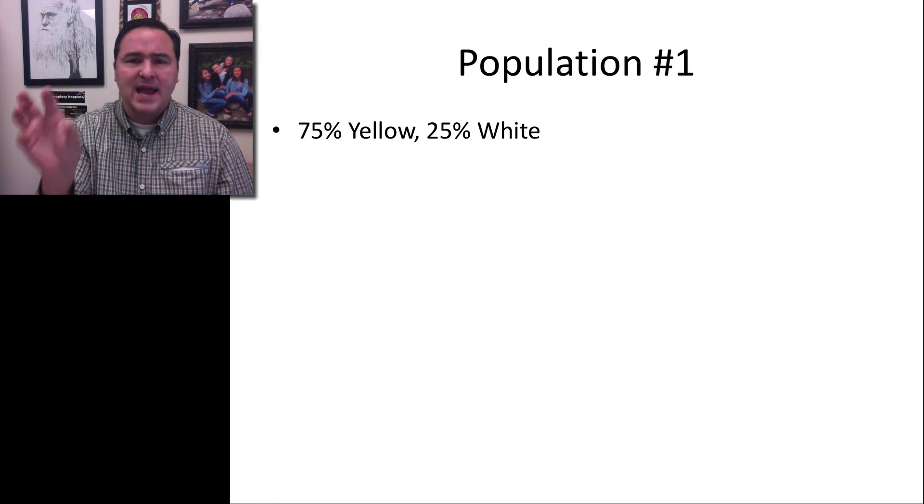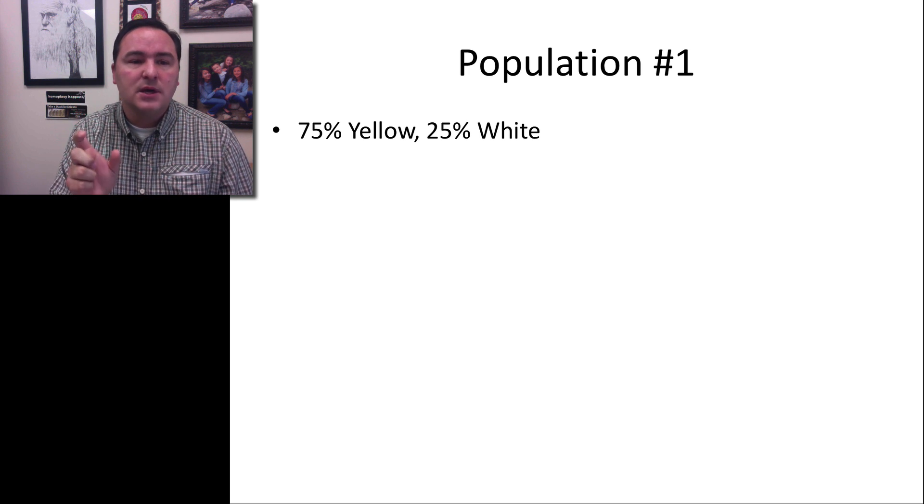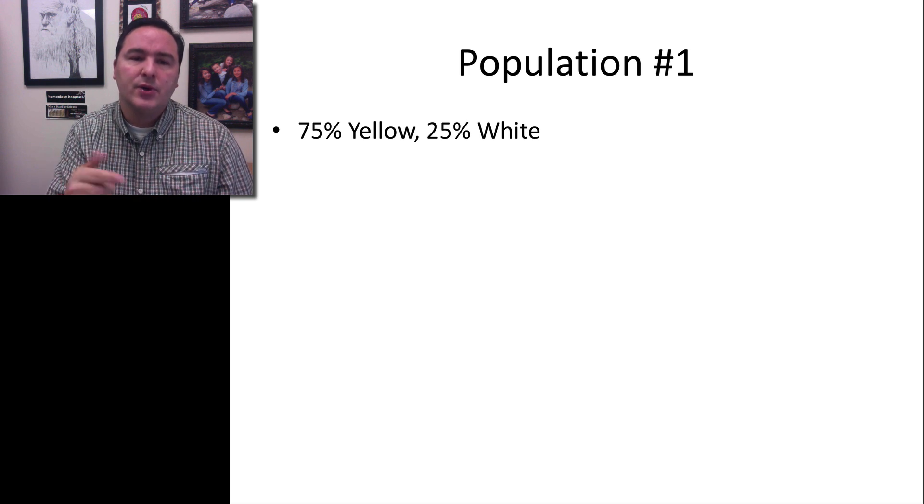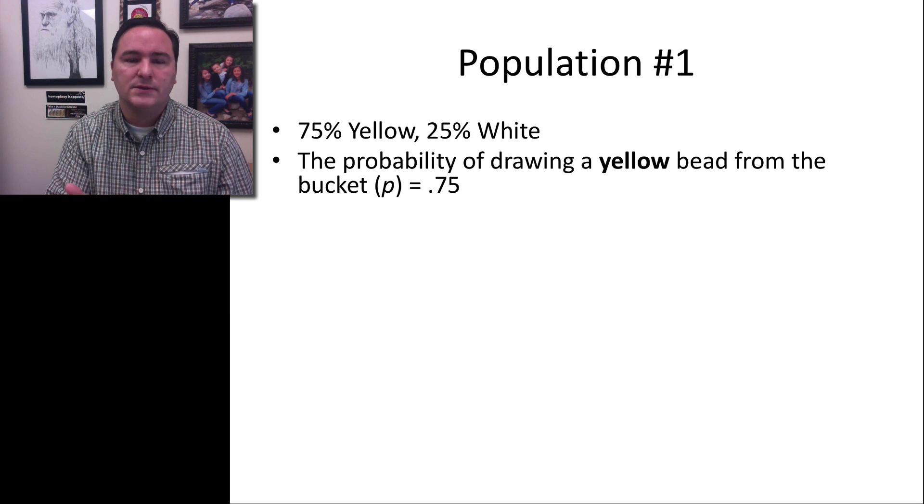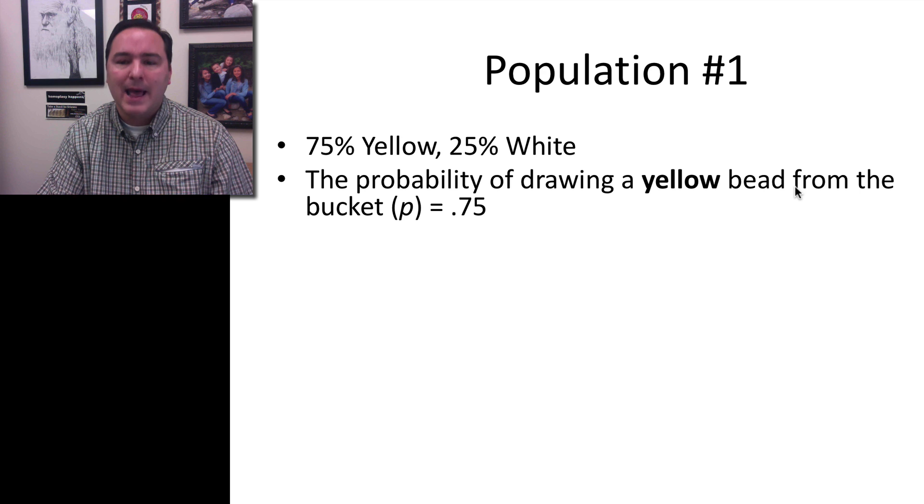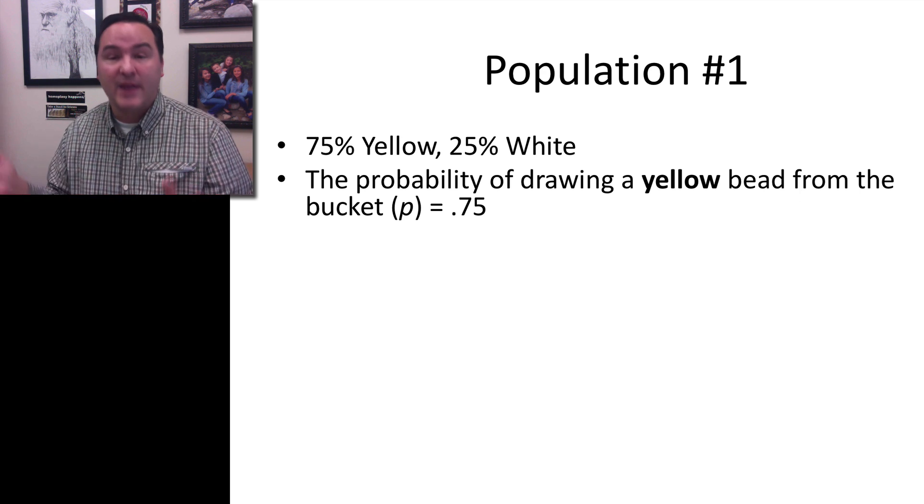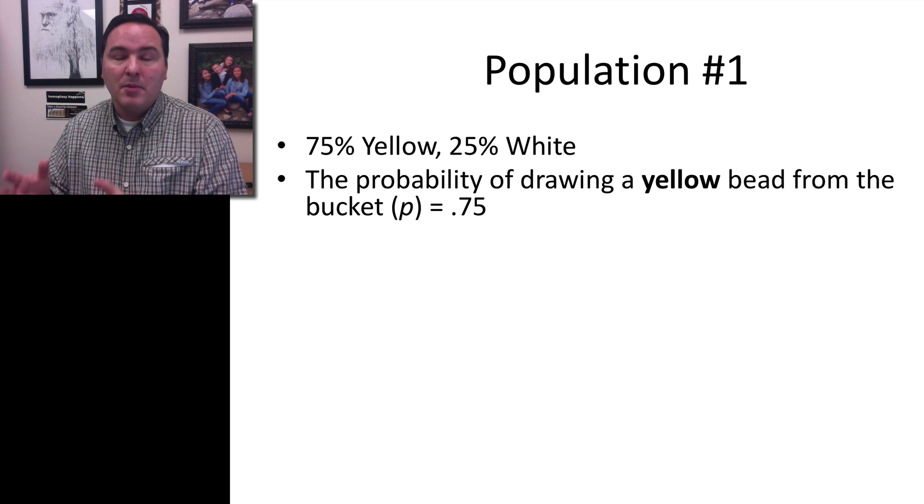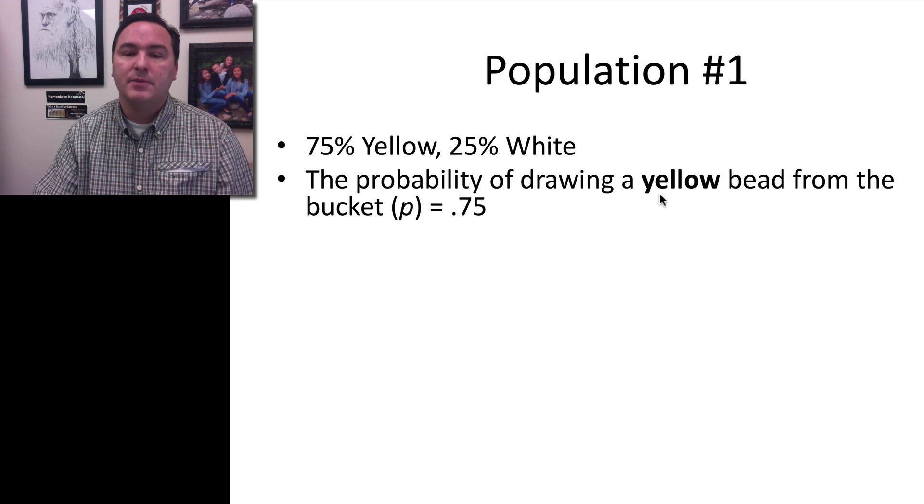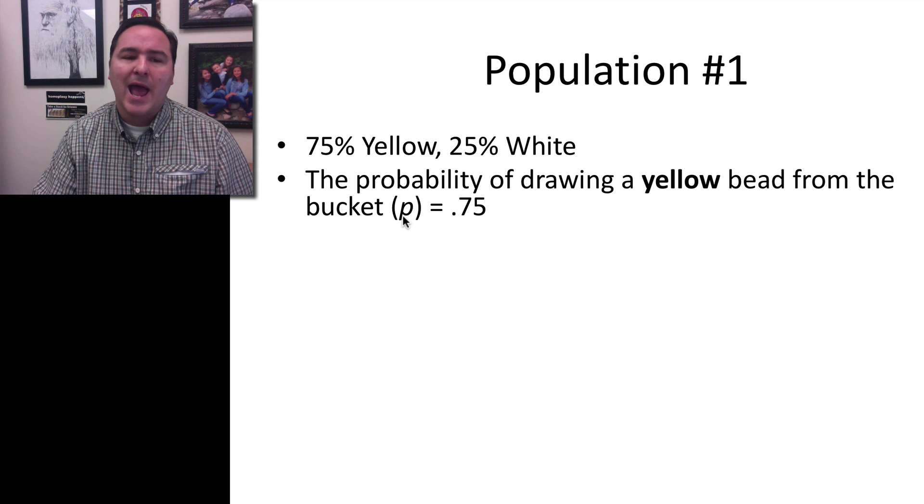So because that's now our population, or that's our numbers of beads, we can actually turn this into talking about alleles and allele frequencies. The probability of drawing out a yellow bead from that population. So if that population were to make a bunch of gametes, the probability that any of those gametes are going to be yellow is 75%. And we're going to refer to this as P.